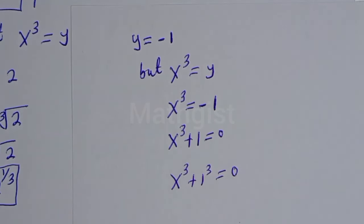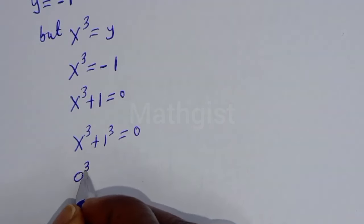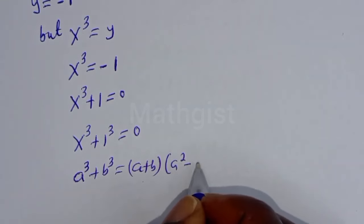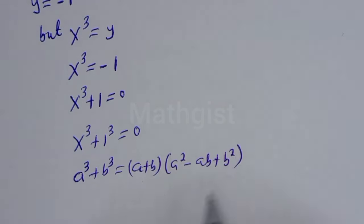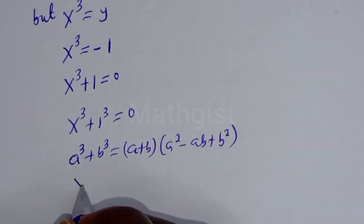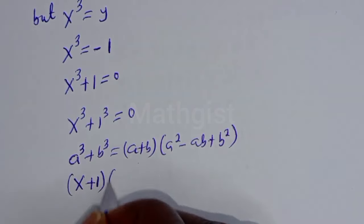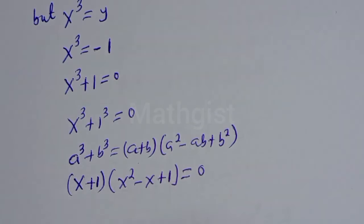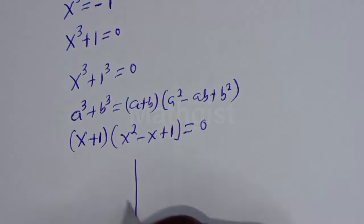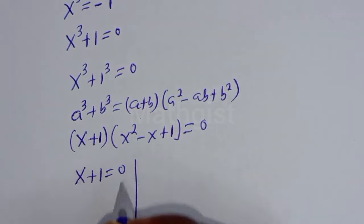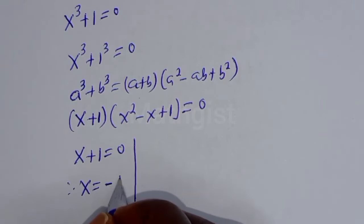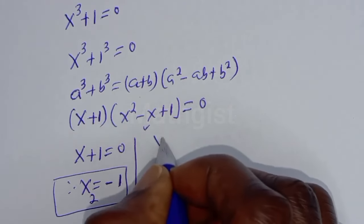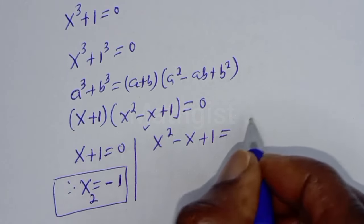Using the sum of cubes rule: a^3 plus b^3 equals (a plus b)(a^2 minus ab plus b^2). Applying this gives (s plus 1)(s^2 minus s plus 1) equals 0. There are two cases: the first case is s plus 1 equals 0, therefore s equals minus 1. Let's call this s2.